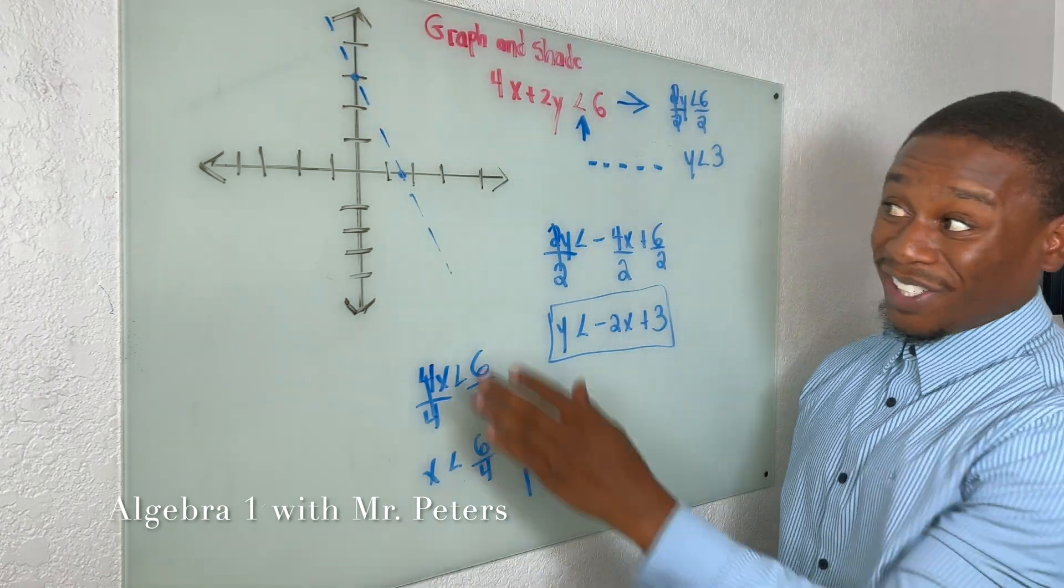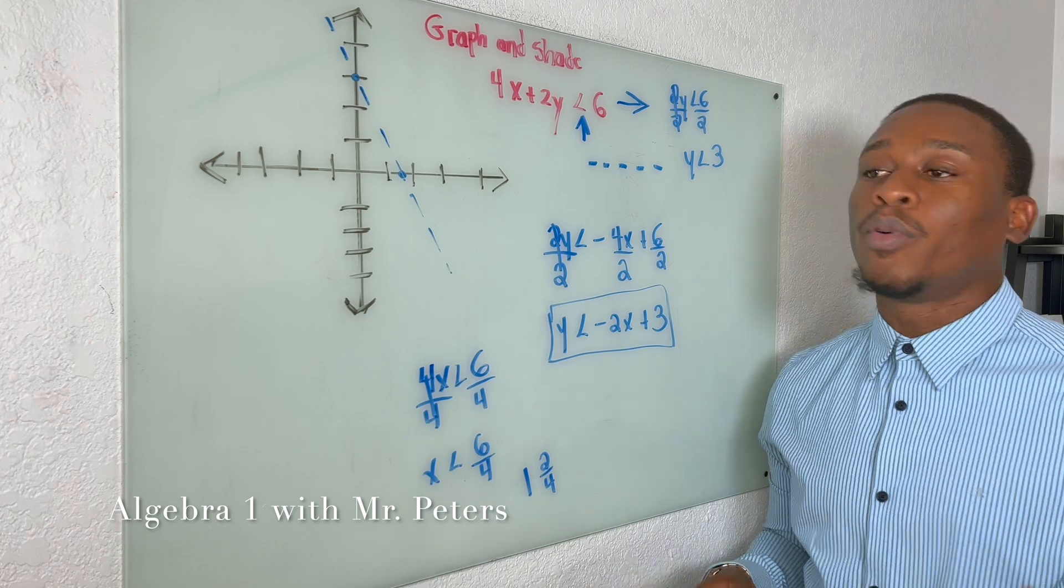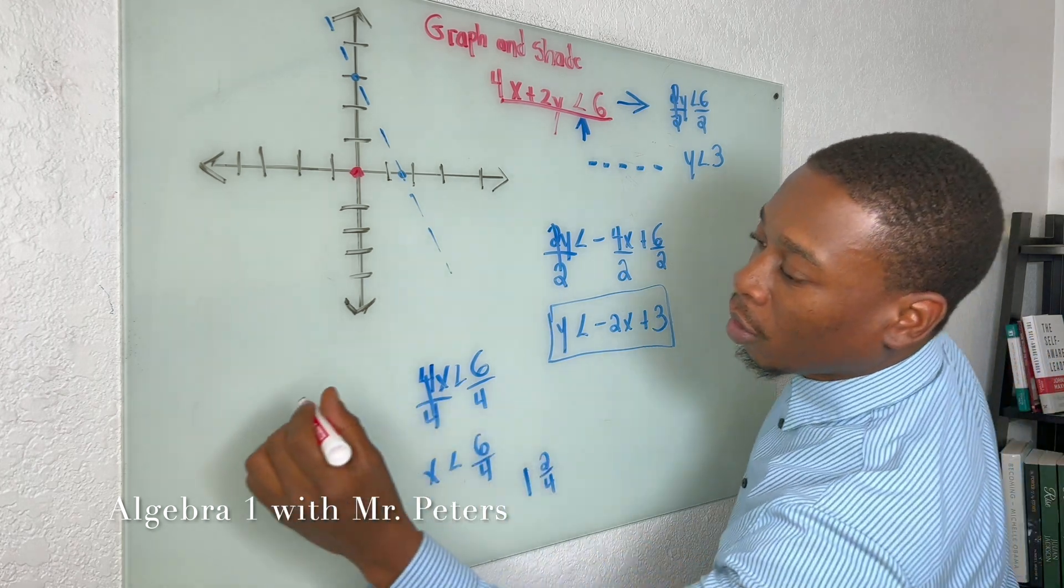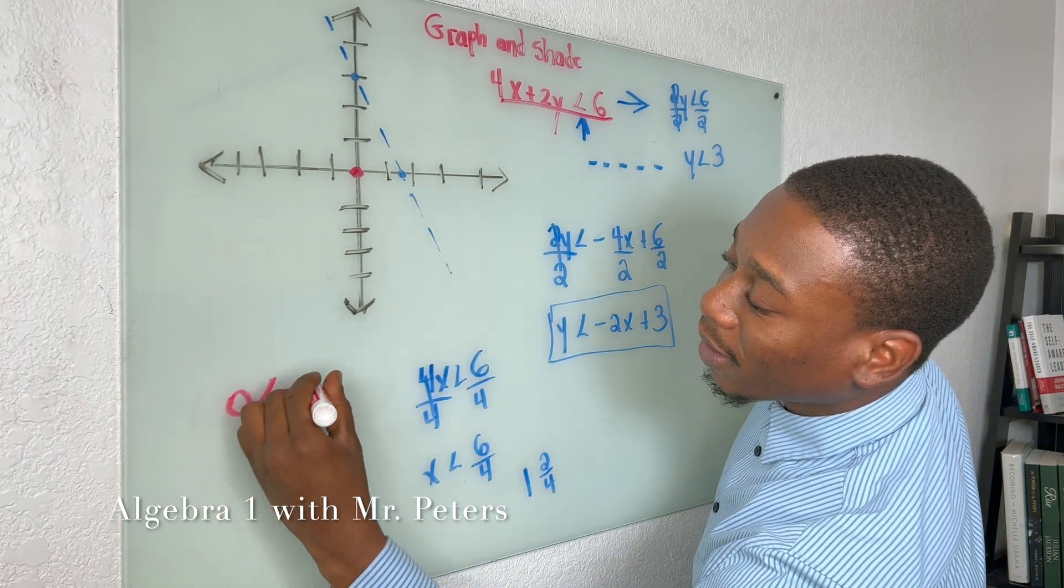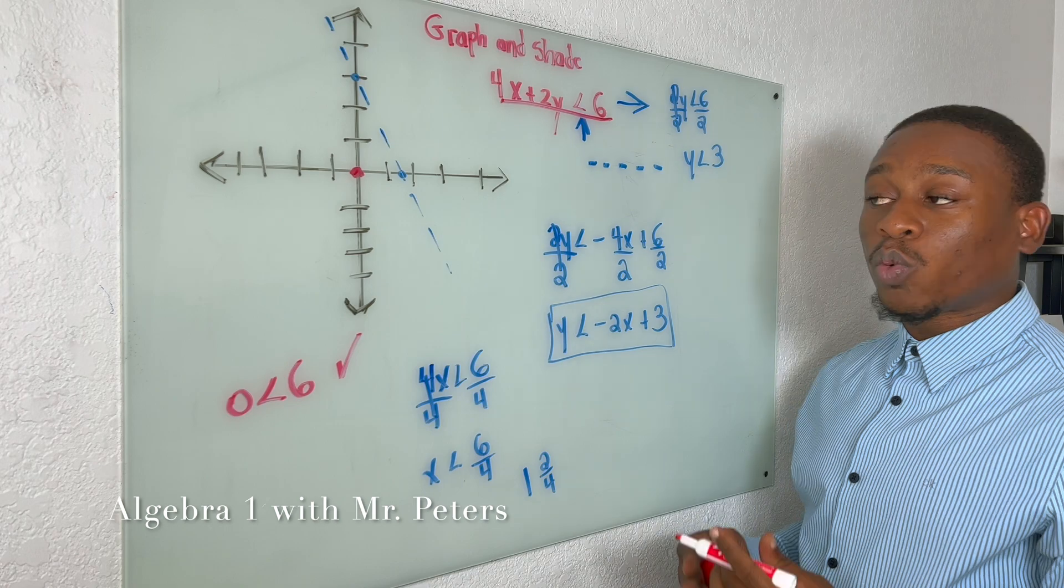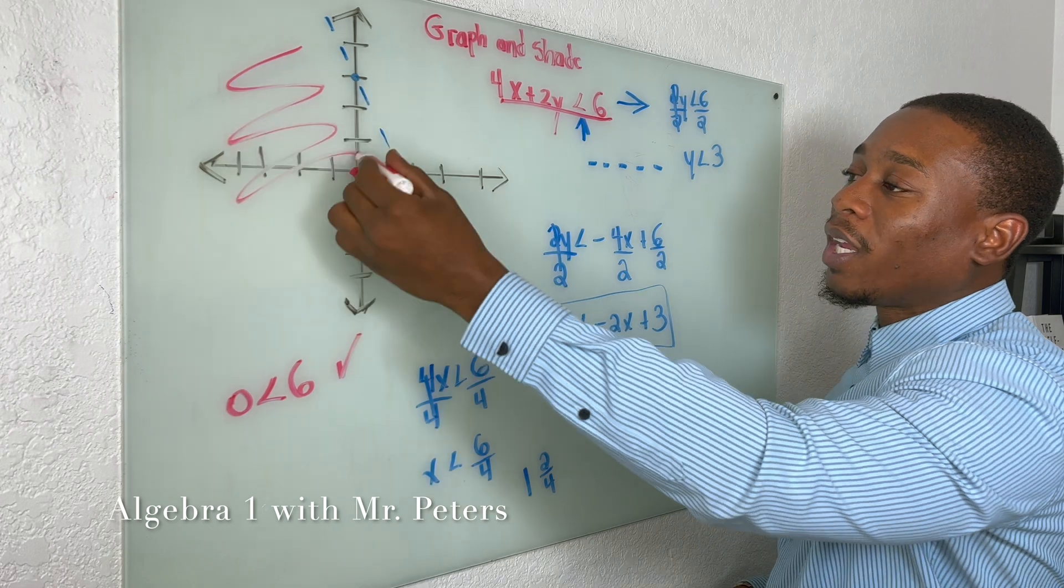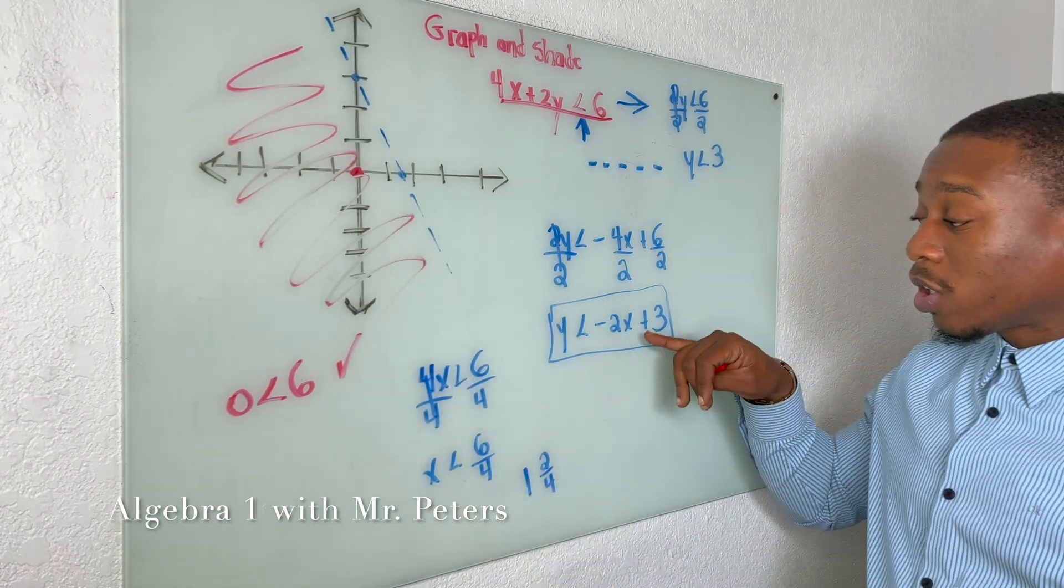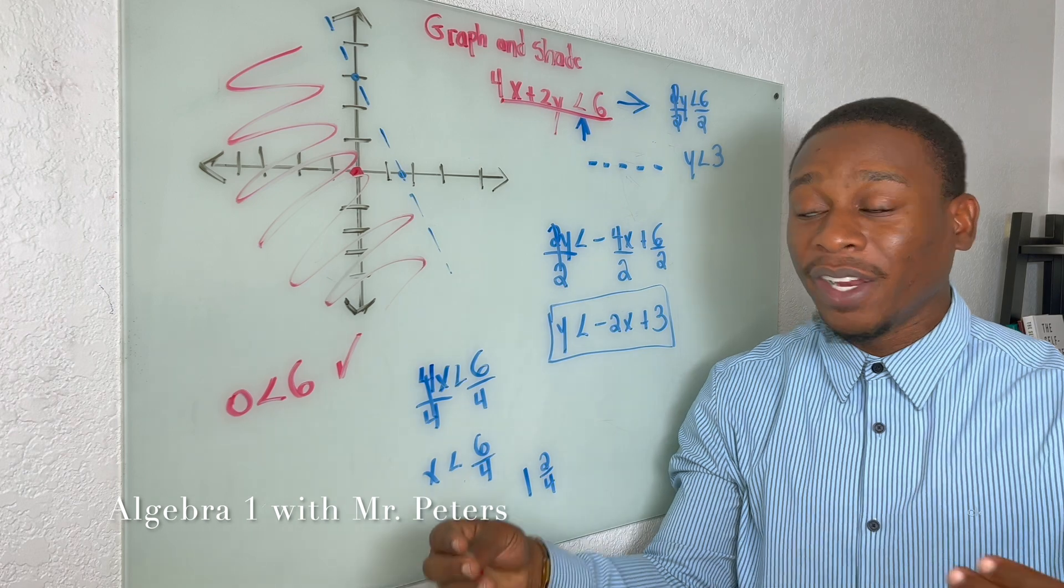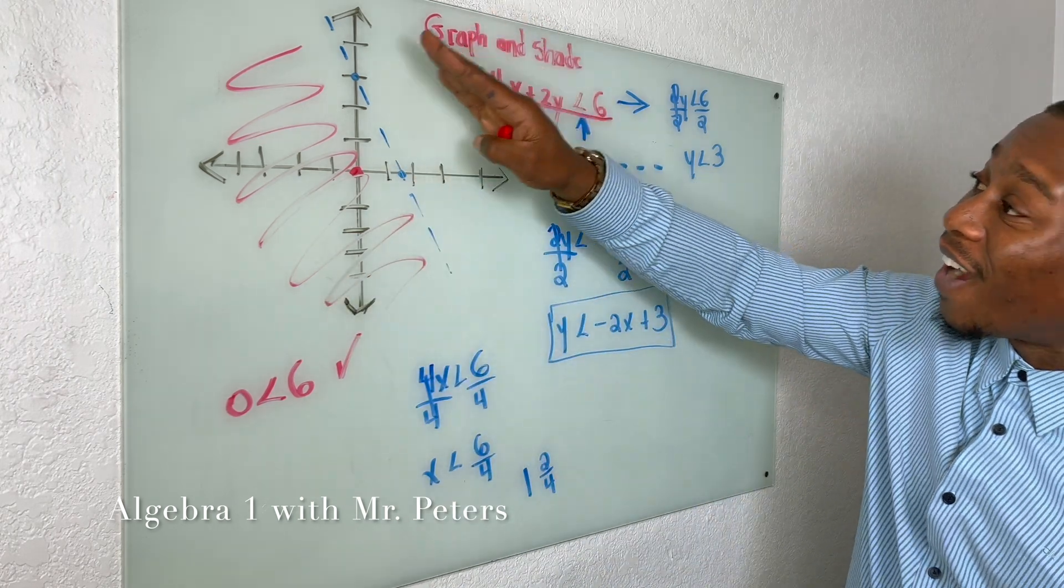Now we need to know, am I shading on this side or am I shading on this side? If you're like me and you forget, pick a point. We're going to pick 0, 0 and plug it into the original equation. So what does that mean? When we simplify it, 0 is less than 6. That is true. When we plug that in, 0 is less than 6. So this means we're going to shade in this area where the point 0, 0 is, and that would be right here. So if you forget how to switch it into slope-intercept form, graph by your intercepts, pick a point, and you'll know whether to shade. If it's a true statement, you're going to shade in the area where the point is. If it's a false statement, you're going to shade on the opposite side.